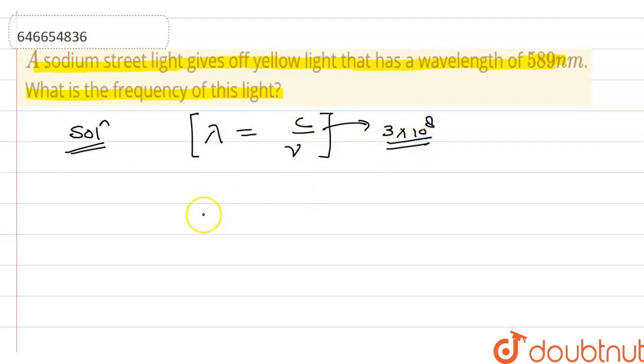So put the value to find the frequency is equal to 3 into 10 raised to power 8 meter per second divided by wavelength that is 589 into 10 raised to power minus 9.